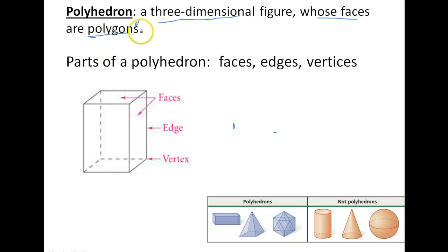Remember, polygons are any straight-sided figures: triangles, squares, rectangles, pentagons, hexagons, octagons, decagons. All of those are polygons.